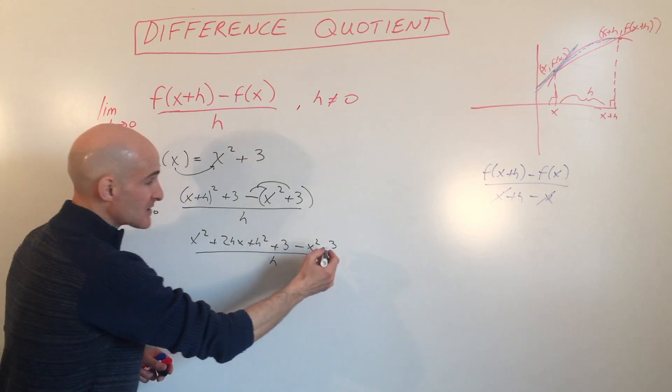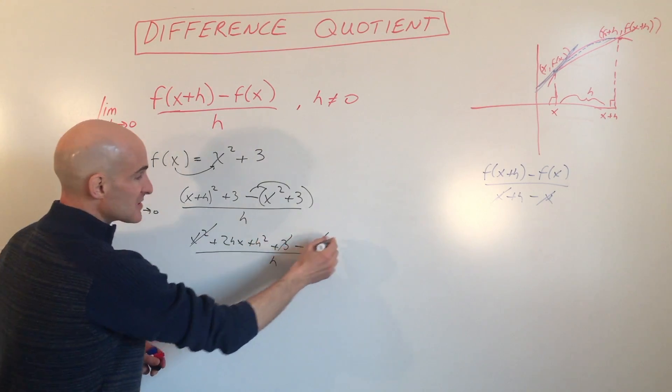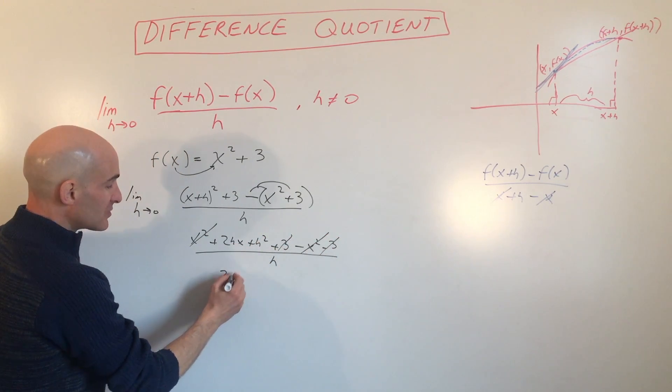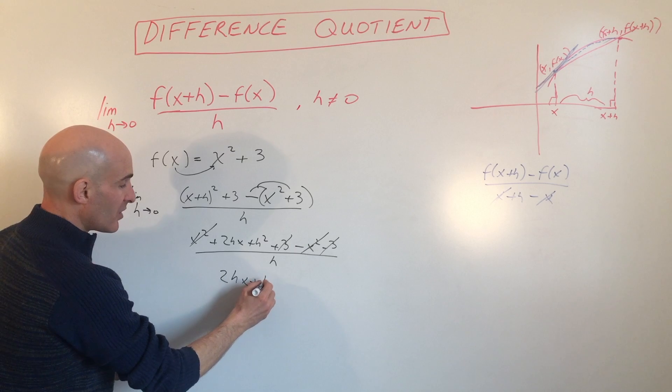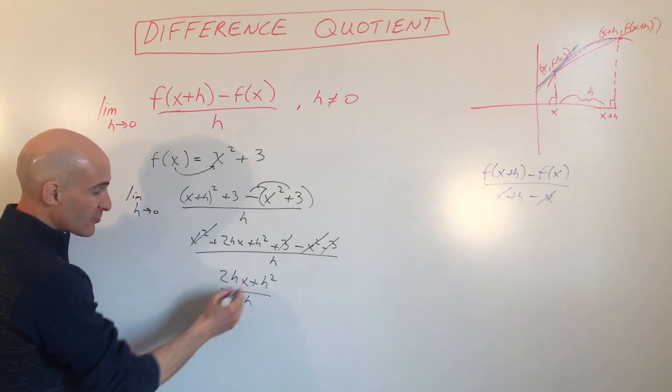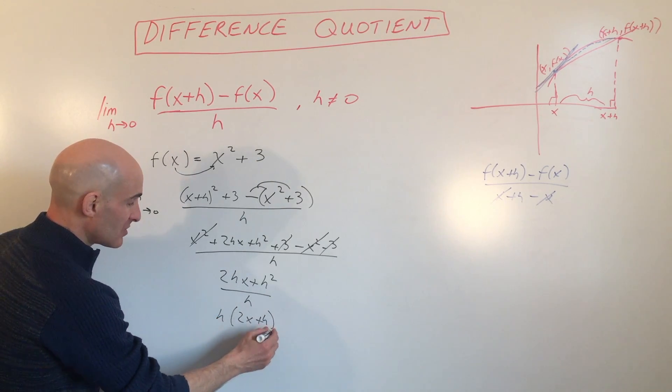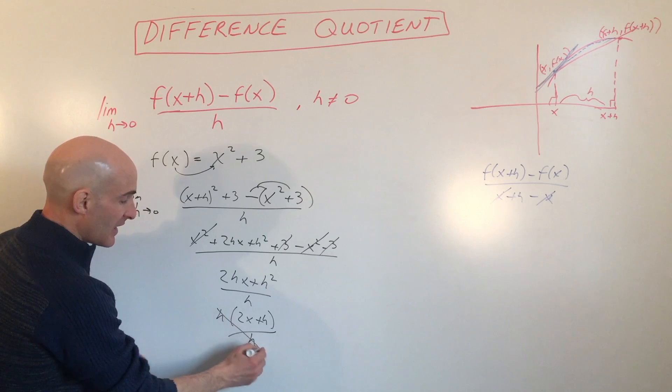Now you can see some cancellation occurring. The x² terms cancel, the 3s cancel, and we're left with 2hx + h² divided by h. We can factor out an h, so we have h(2x + h) divided by h. The h's cancel.